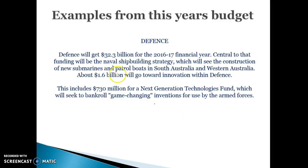Examples from this year's budget: defence will get $332.3 million, based mainly around trying to build naval ships, which will also include the construction of submarines that will patrol around South Australia and Western Australia. There's also $730 million for what we call a next generation technologies fund, which is basically trying to come up with inventions for our armed forces to make them safer and more innovative.